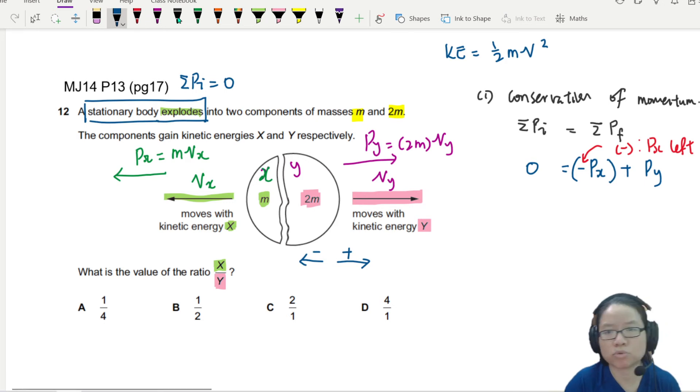Let me pull this one over. Don't want to see the negative sign. So Px is equal to Py magnitude wise. And I can say m Vx is equal to 2m Vy. So from here, I can cancel off my m. And I get Vx is equal to 2 Vy.